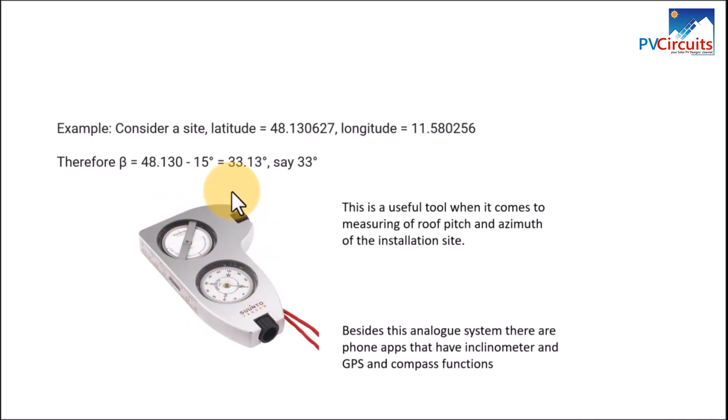Although this is analog, these days we have phones which have apps that perform this function. You can get a phone that will both have the inclinometer and of course a compass, and then that will help you to determine the inclination as well as get the azimuth angle.